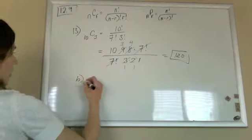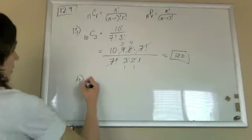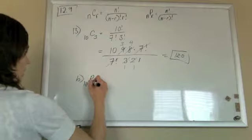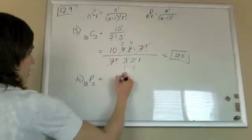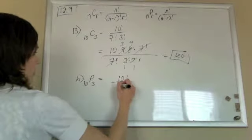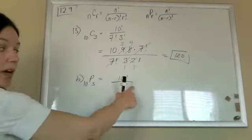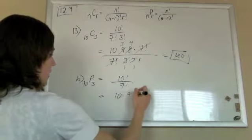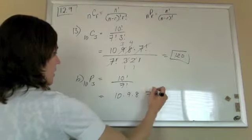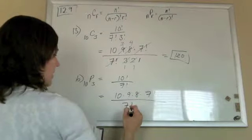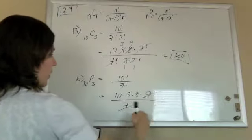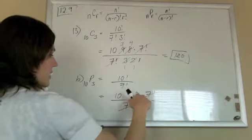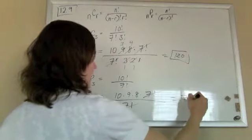And for part b, they're having to do the same thing, but 10P3. So 10 factorial over 7 factorial with no extra 3 factorial there. So just 10 times 9 times 8. And I'm going to let the 7 factorial cancel out with the 7 factorial on the bottom. So just 10 times 9 times 8 is 720.